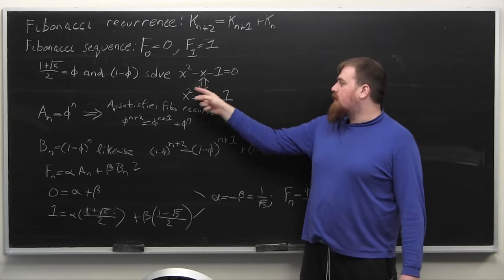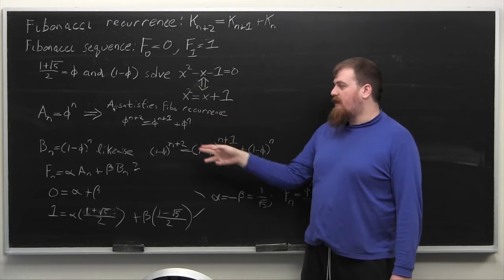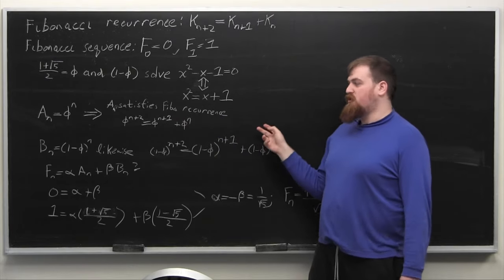If we multiply phi squared equals phi plus 1 by phi to the n, we get that a_n equals phi to the n satisfies the Fibonacci recurrence.